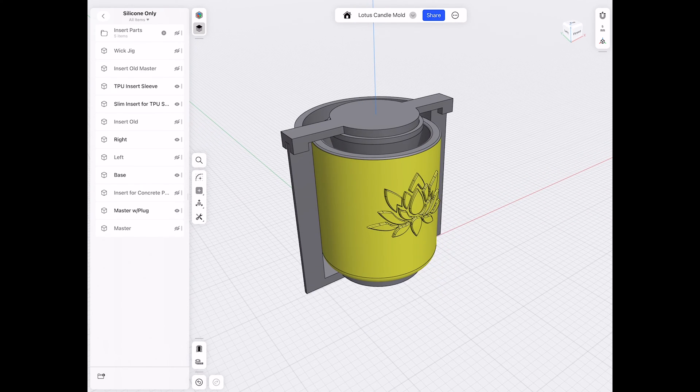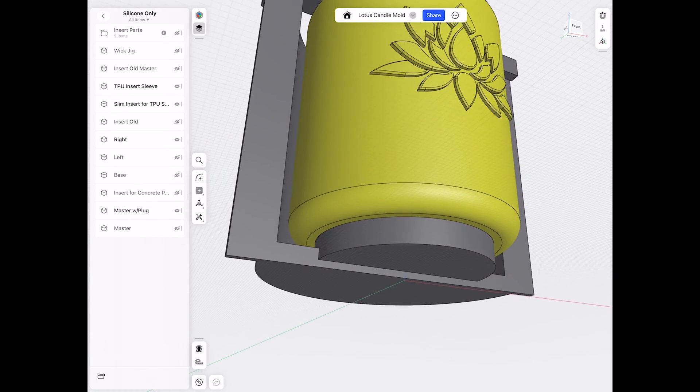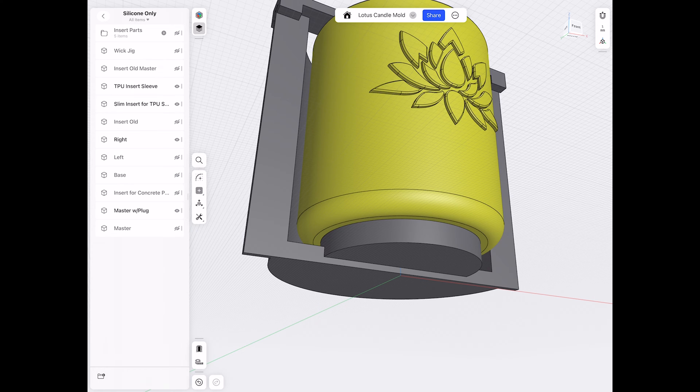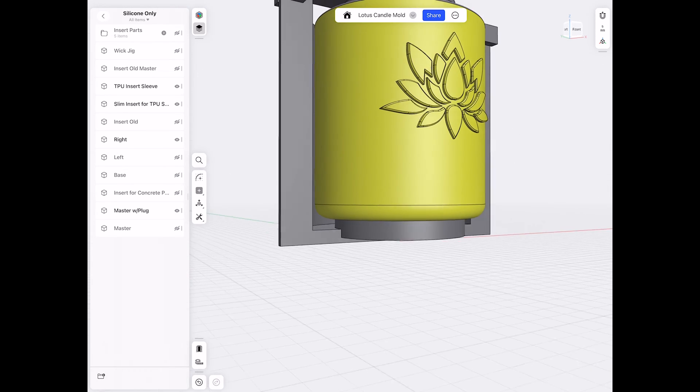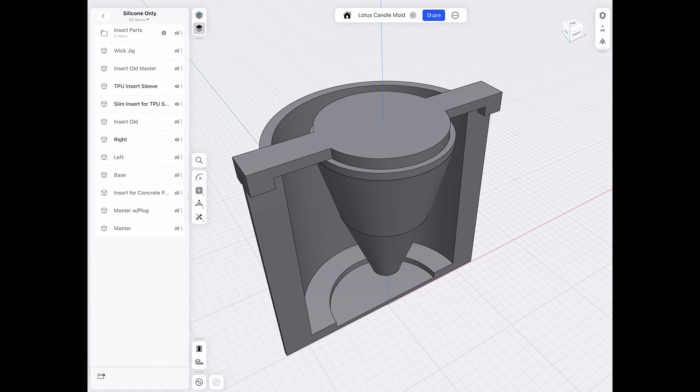That will be imprinted on the silicone when I pour it. You see on the base here, I have an interlocking piece to try to keep the silicone in the outer shell. It helps to make sure it doesn't bleed out too much, even though it does a little.